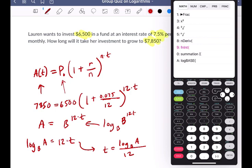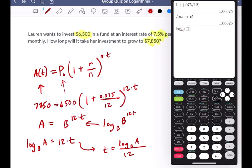So when I hit log base, my base is going to be what I stored as B. My A value is here. And I want to take that whole thing and divide it by 12, and that's going to be my answer.